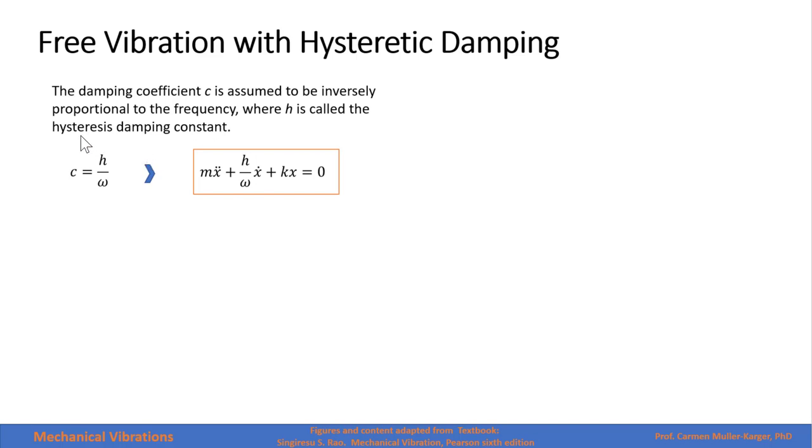Therefore, if we substitute the damping coefficient into our typical equation of motion, we get this expression right here, where we have the constant of the damper and the constant of the spring. The energy loss for a viscous damping, you recall, that is this expression right here.